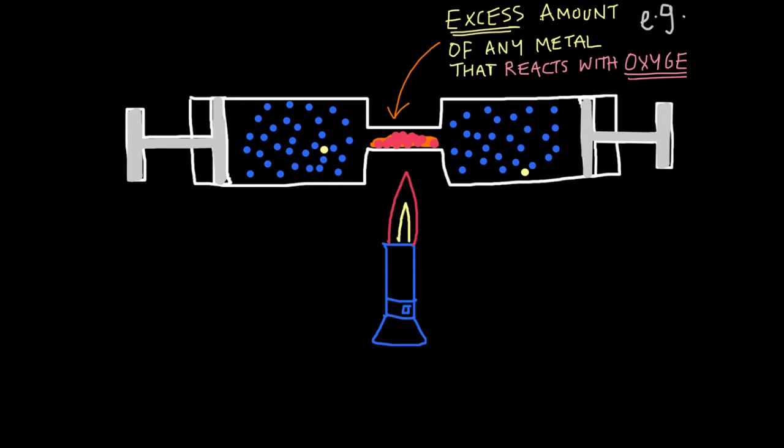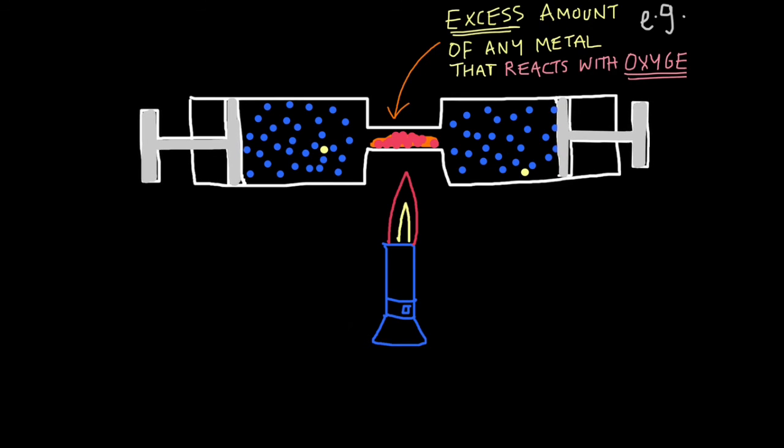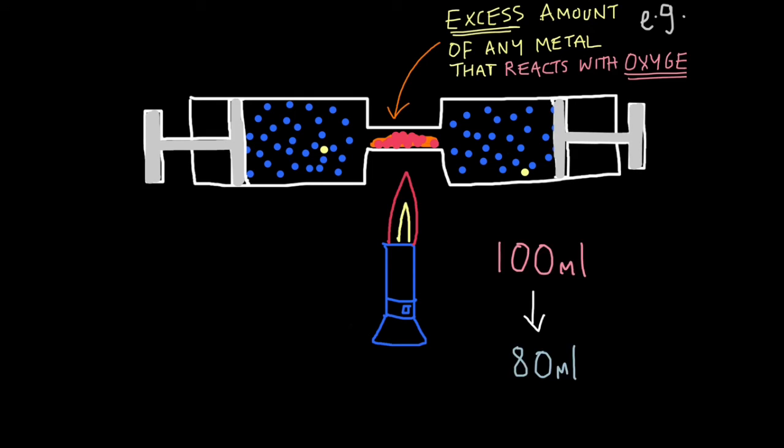So now all the oxygen's been used up in this chamber, a vacuum is created. Basically an empty space where there are no particles where oxygen used to be. This will create a suction pulling the plungers inwards to replace the oxygen which is now gone. So if we started off with 100 milliliters of air in this chamber, now after the oxygen's gone and the plungers have moved in, we only have 80 milliliters of air left.